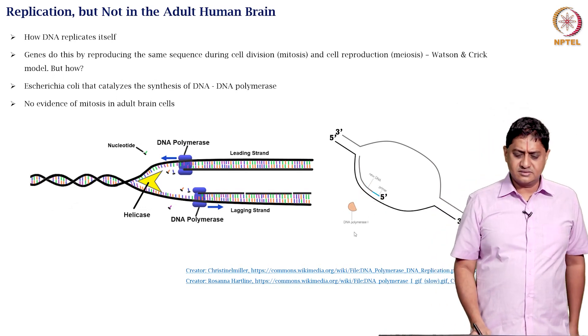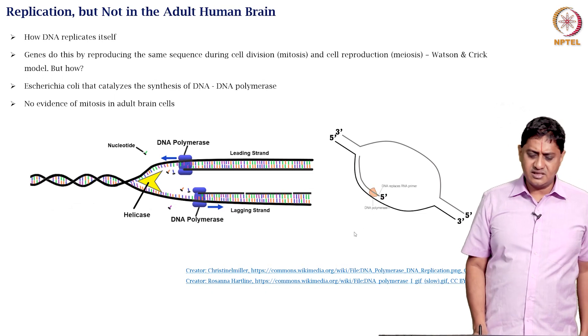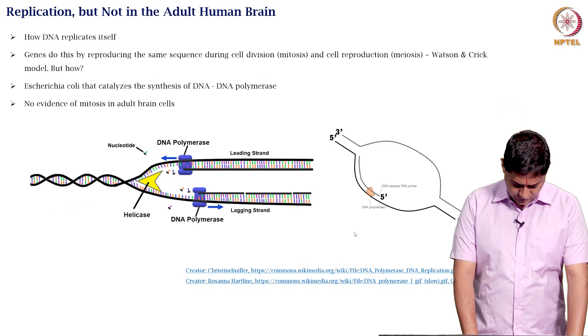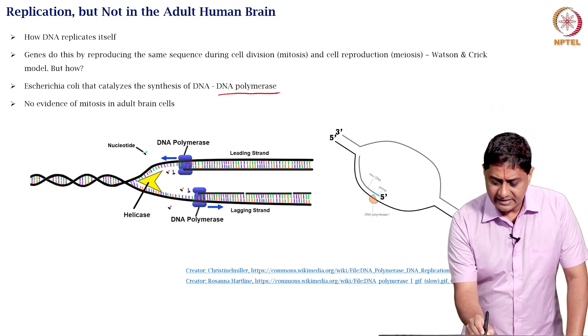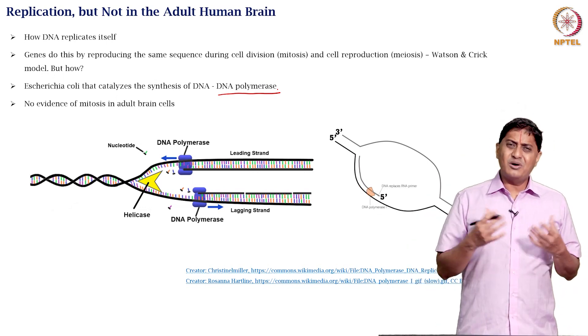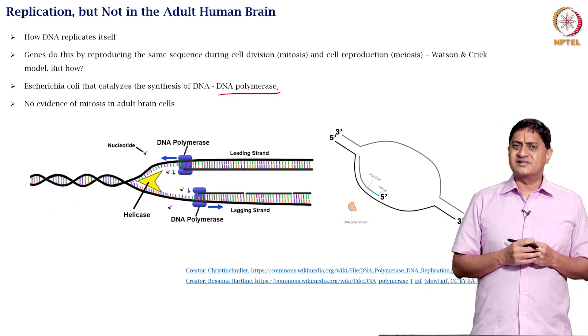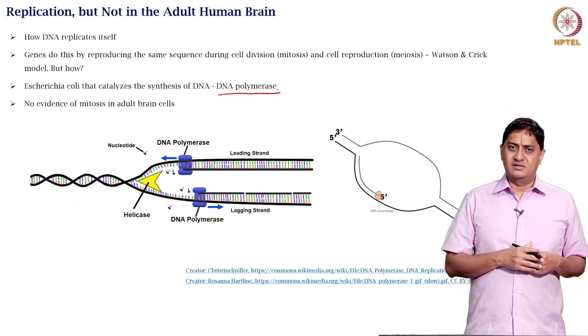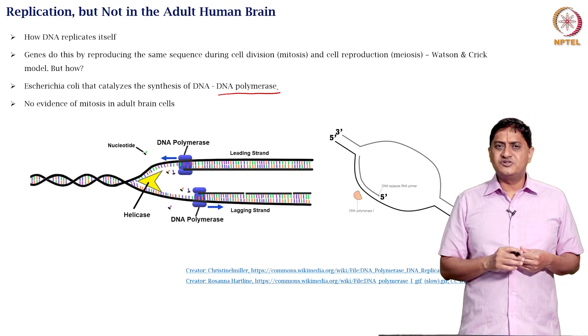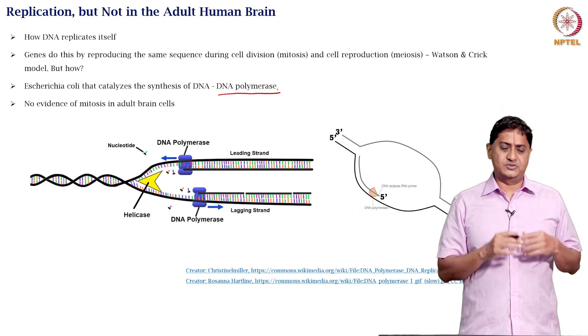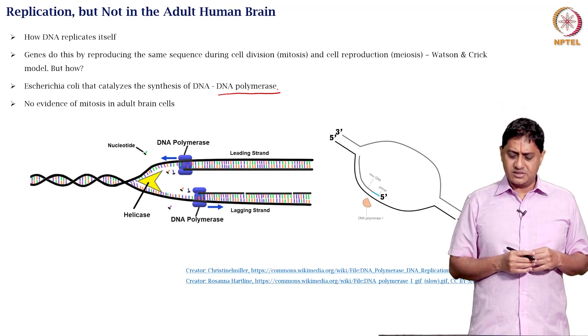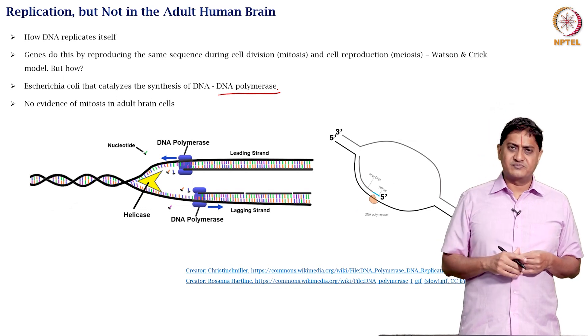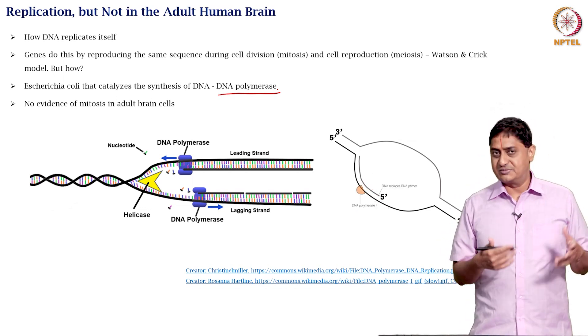It was also found that the bacteria E. coli was catalyzing the synthesis of DNA, which led to the discovery of DNA polymerase. Some organs, like for example the liver, were capable of regenerating. From a small amount of tissue, they will practically regenerate their entire tissue. This was possible for the liver, this was possible for skin. After an injury you see that there is healing that happens. Although a scar appears, still there is healing.